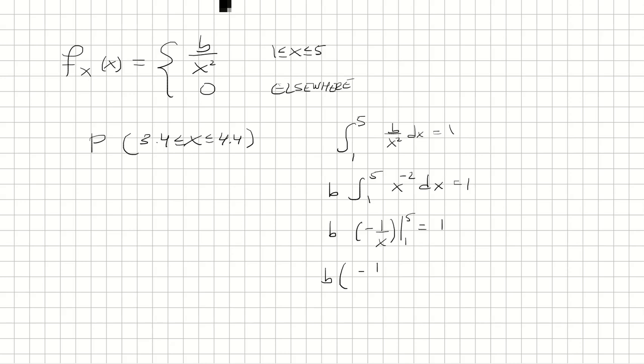Plug in 5, we get negative 1 fifth, minus plug in 1, we get negative 1. So that's going to be 2 negatives, it's going to make it positive 1, equals 1. And so negative 1 fifth plus 1 is 4 fifths, so multiply both sides by 5 fourths, we get that b is 5 fourths.